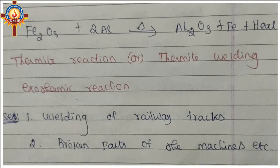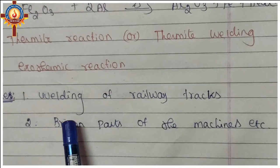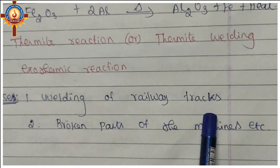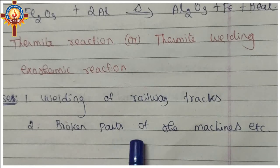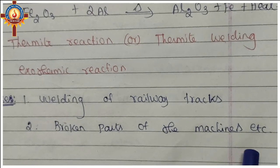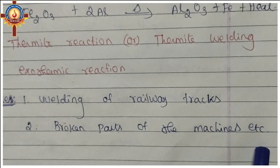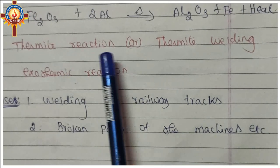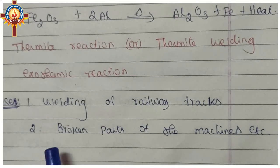The uses of the thermite reaction include welding of railway tracks and broken parts of machines or other machinery parts.